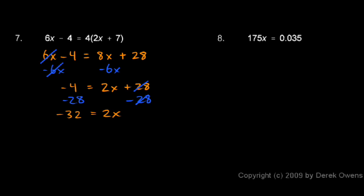And you should be able to see that if 2 times x is negative 32, then x is negative 32 divided by 2, so x is negative 16.